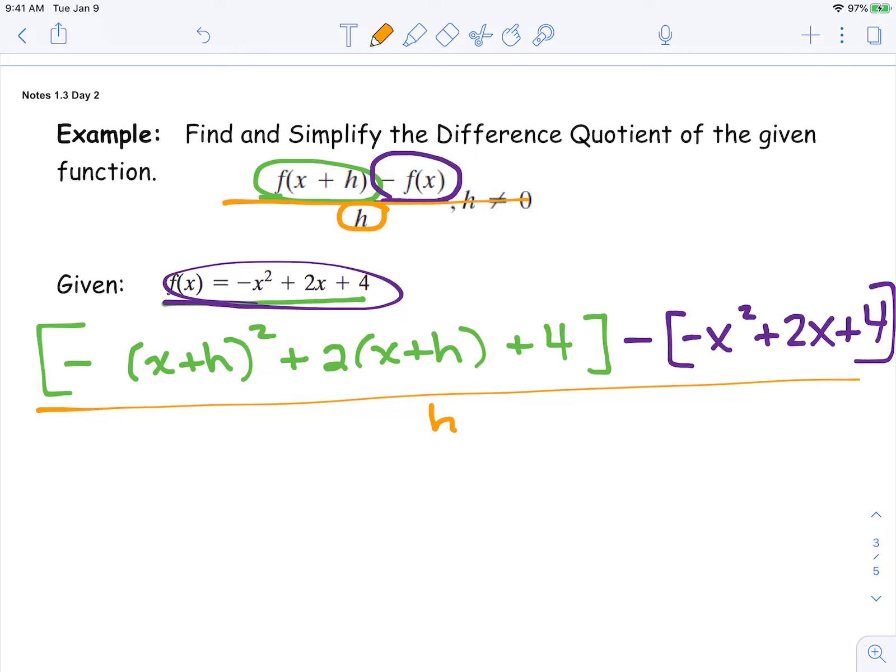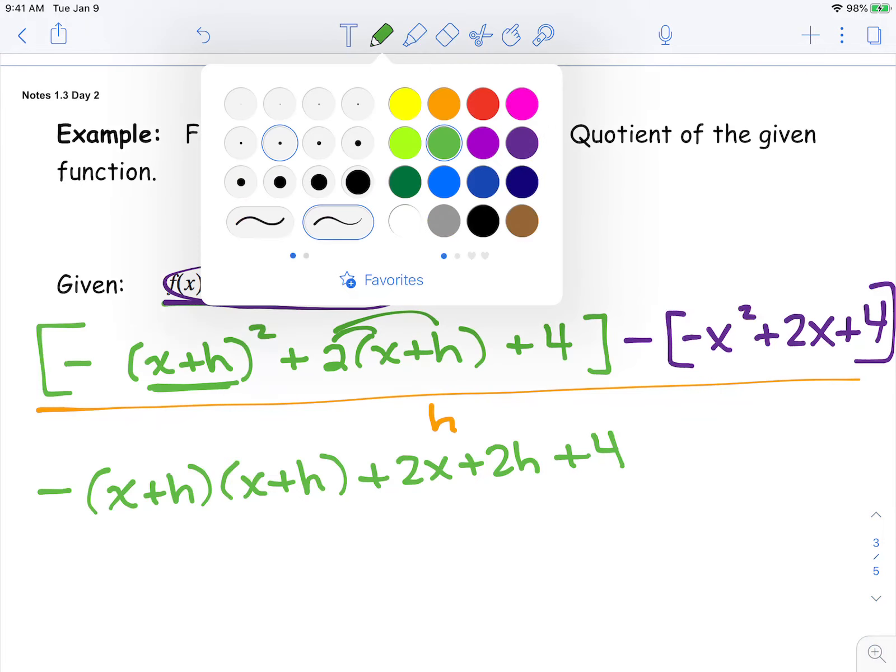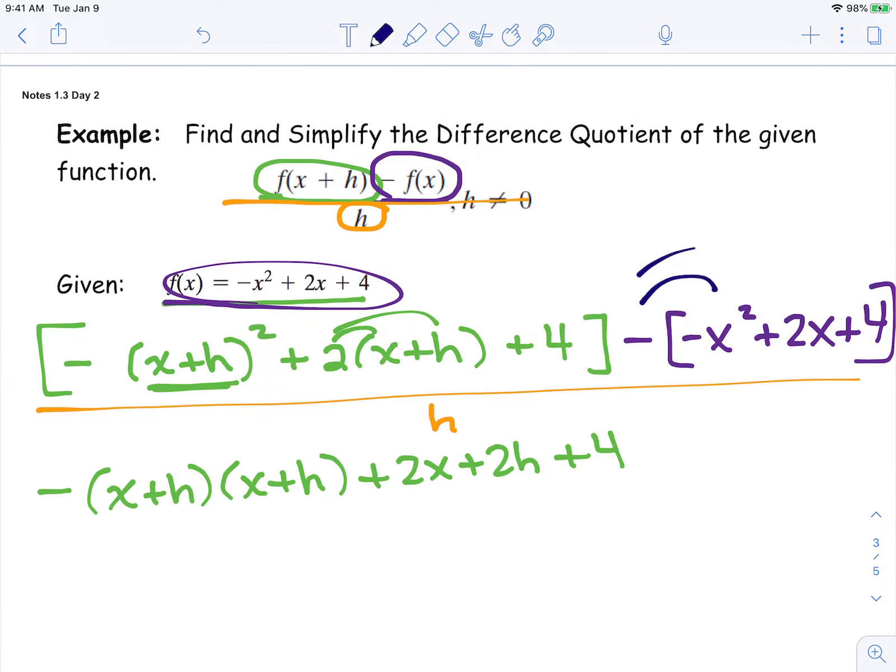Now what makes this problem challenging is there's a lot of simplification that has to happen. Notice this is an x plus h all squared. So it's minus x plus h times another x plus h. We're going to distribute the 2 in. So that's 2x plus 2h. And then we have the plus 4. Now in the purple, we need to distribute that negative in. That's going to change all of those signs. So it's a positive x squared, a negative 2x, and a negative 4. And then it's all over h.